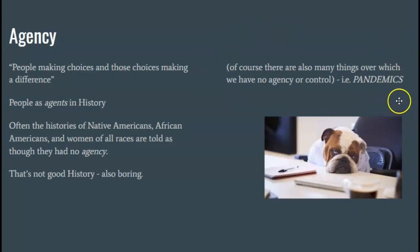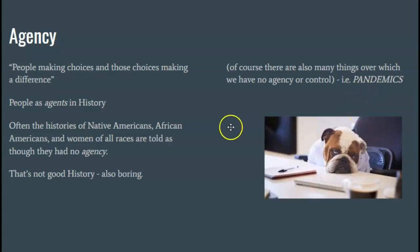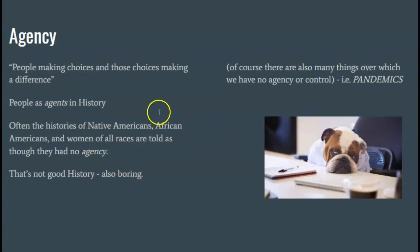I also want to emphasize that there are a lot of things people have no control over when it comes to studying the past or the present. A great example is a pandemic — germs spread and we have some control over that, but not nearly as much as we'd like. Another might be natural disasters or weather in history. This is the study of history: the interplay between people being able to make choices that make a difference, and all those things that limit people's ability to make those choices.